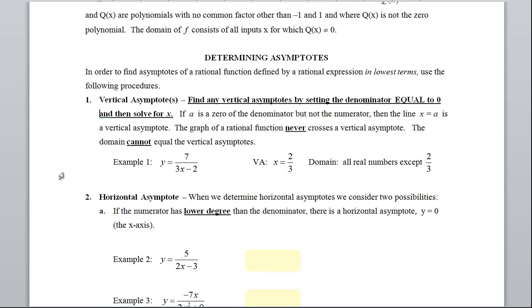Now horizontal asymptotes, in a way, are a little bit quicker, but you have to compare. So when we determine horizontal asymptotes, we're going to consider two possibilities. There are three, but we're going to be required to know these two that I'm going to be looking at.